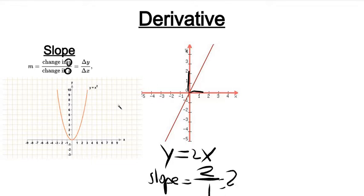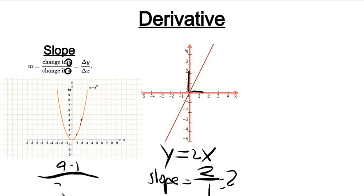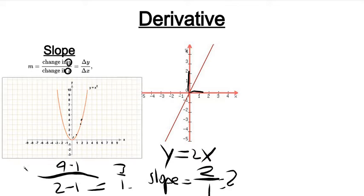So our slope would be 2. For a curved line, it doesn't work like that. If we subtract the point — let's say 2, which would be 4 — and then subtract 1, that would be 4 minus 1, which would be 3 divided by 1. But it's a curved line, and you can only use that formula for lines, so that wouldn't be really logical. That's where the derivative idea comes in.